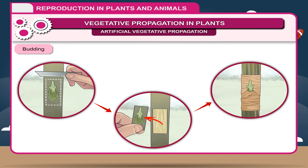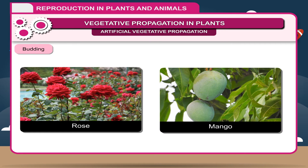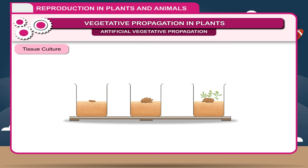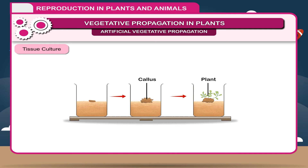Budding. It is similar to grafting. In budding, a single bud instead of a branch is grafted onto the stalk. For example, rose, mango, etc. Tissue Culture. A tiny piece of leaf or stem from a plant is removed and placed in a sterile test tube on a gel-like medium enriched with hormones and nutrients. A yellow-brown unorganized mass of cells called callus develops. Small chunks of the callus are separated and each piece is placed in a petri dish containing nutrients, where it develops into new plants. The young plants are then removed and placed in pots with soil.